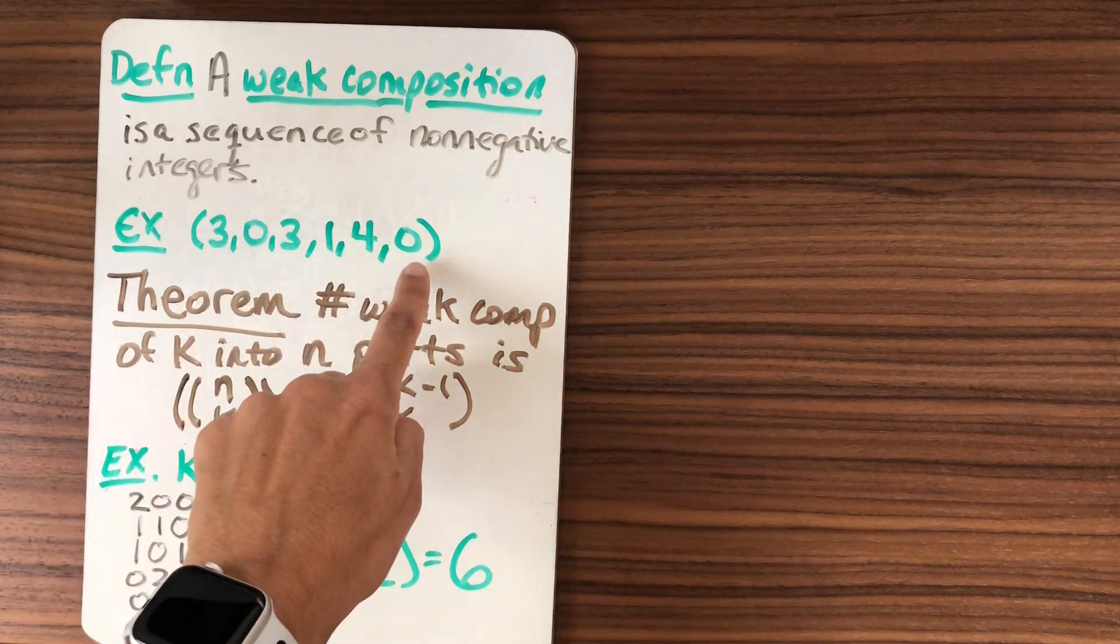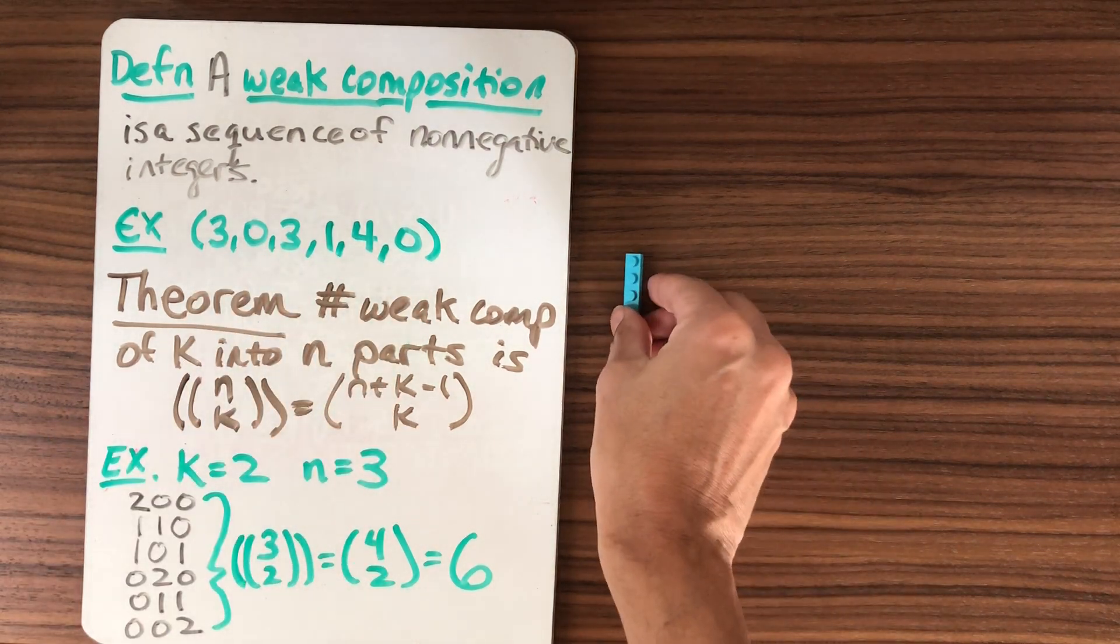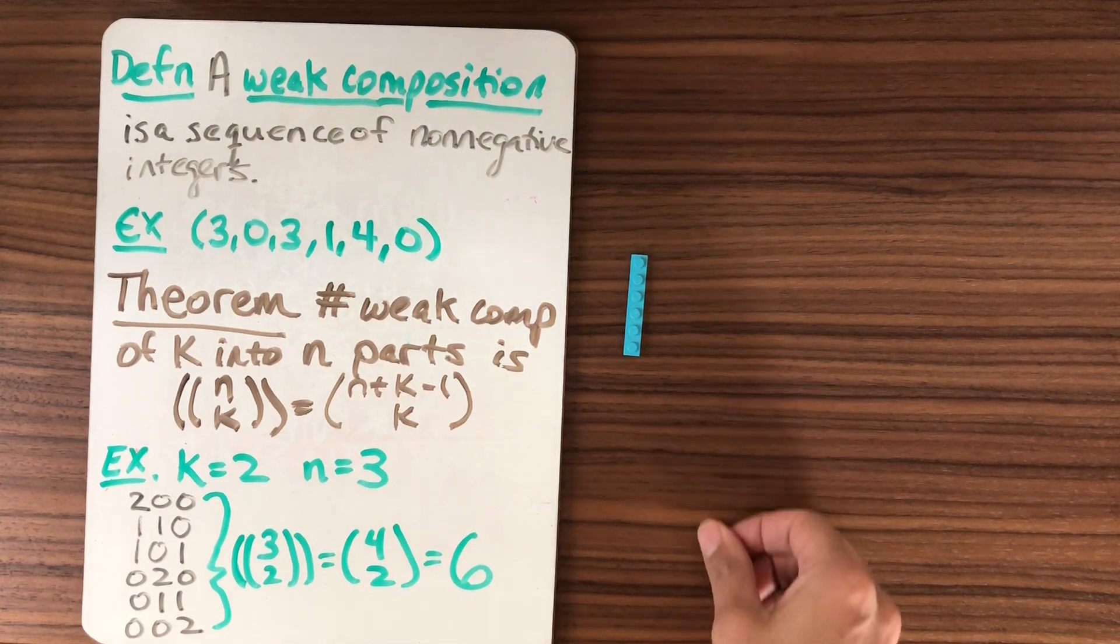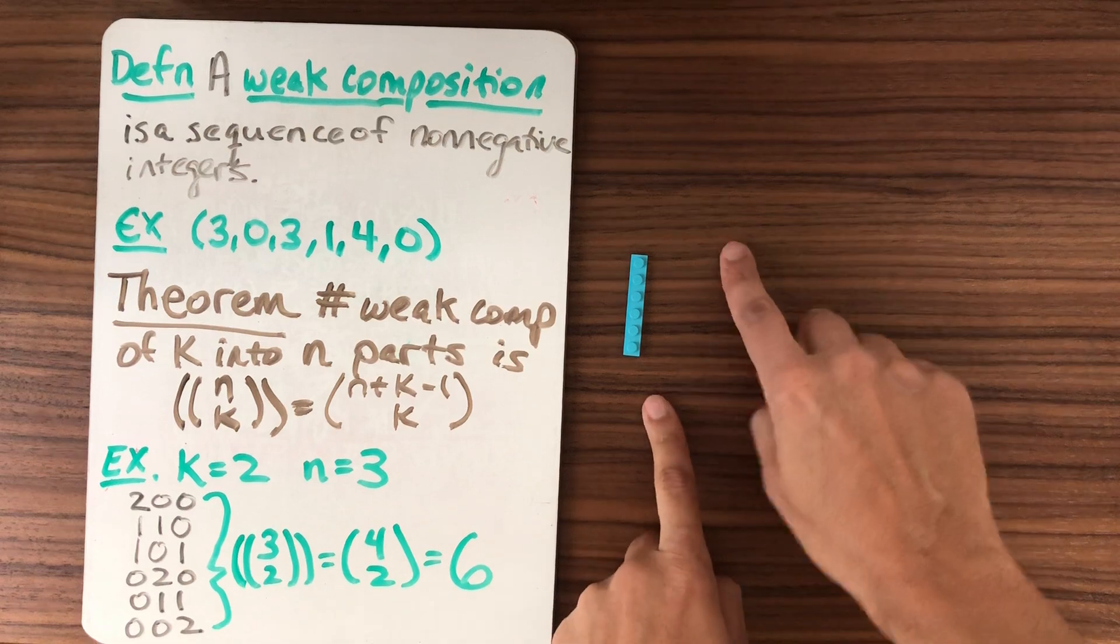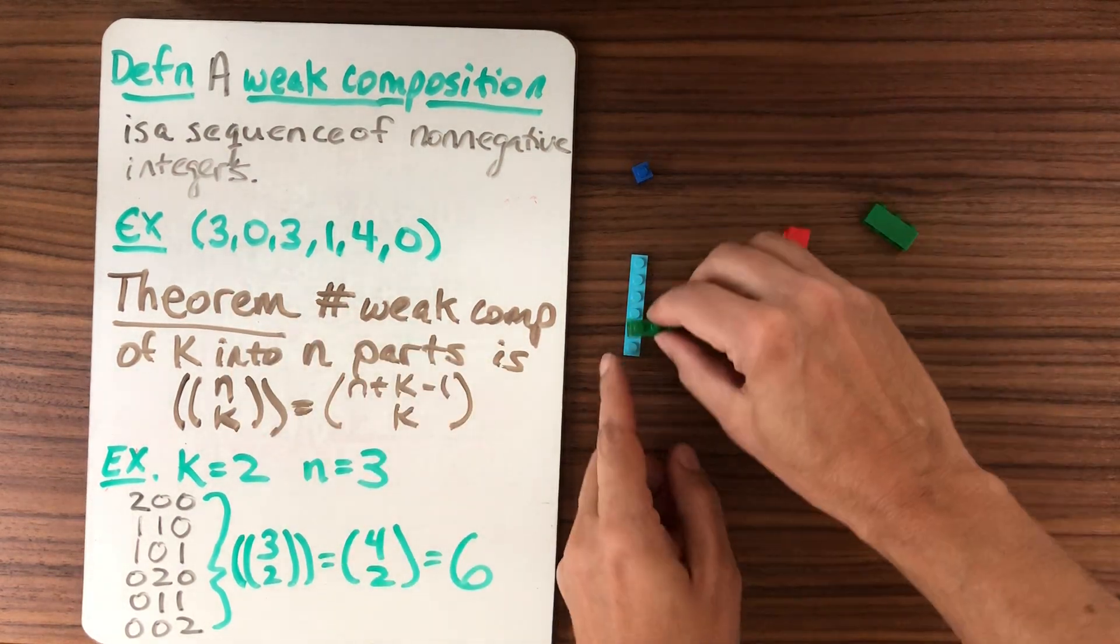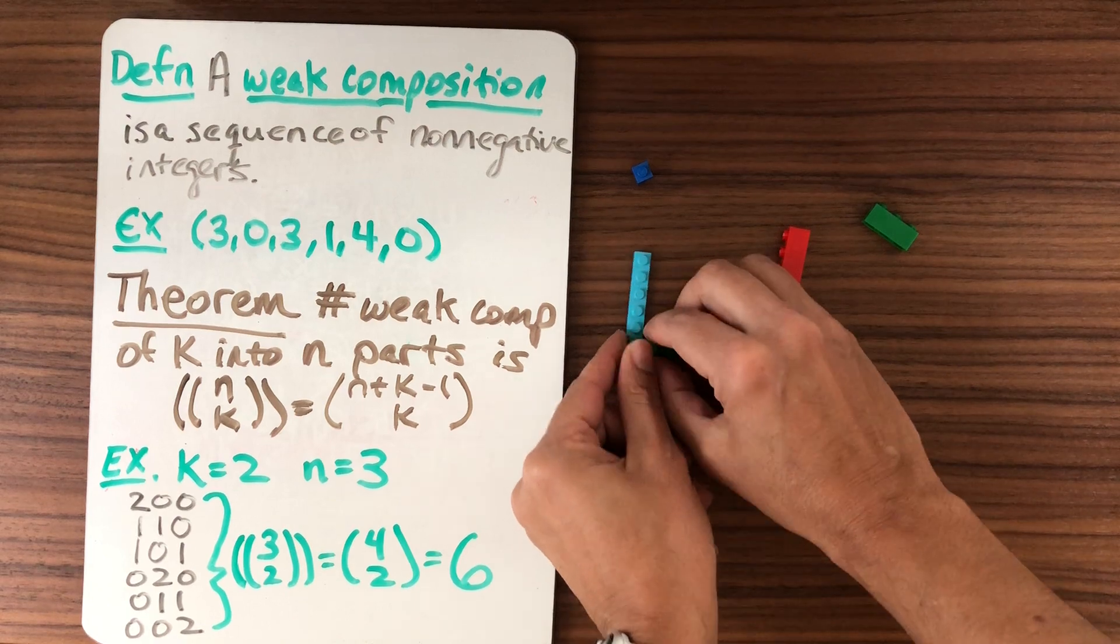So here I'm looking at a weak composition into six parts. So I'm going to have six holders. There are six studs here to hold the parts. And now from the bottom up, I can build the parts. So first I start with a three.